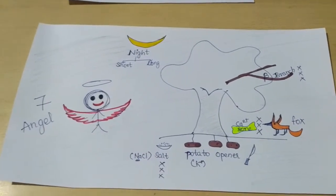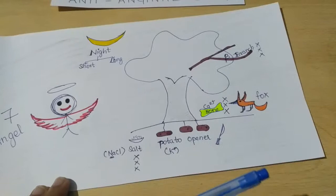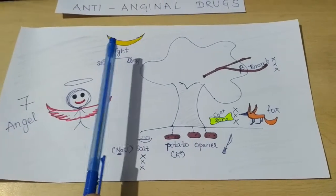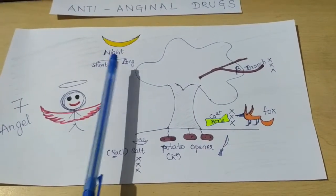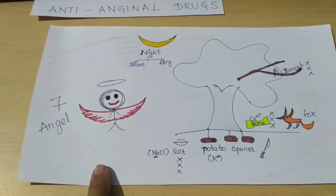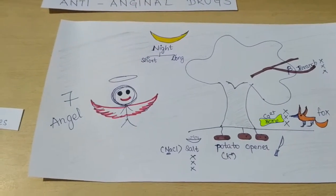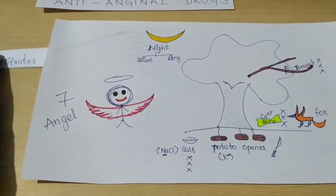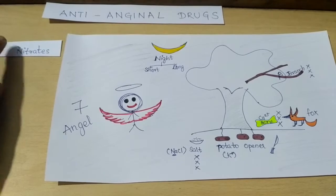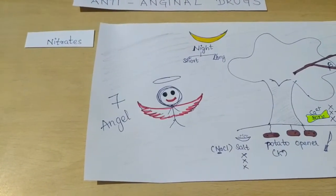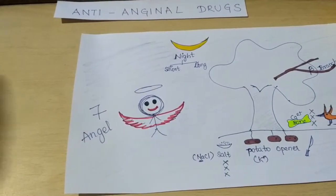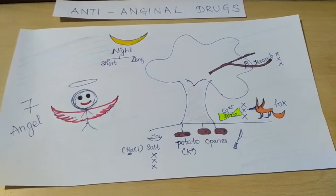We see this is a scene of night — the moon represents the night. Nights can be short or long, so night gives us the class of drugs which is nitrates. Nitrates can be short acting or long acting.